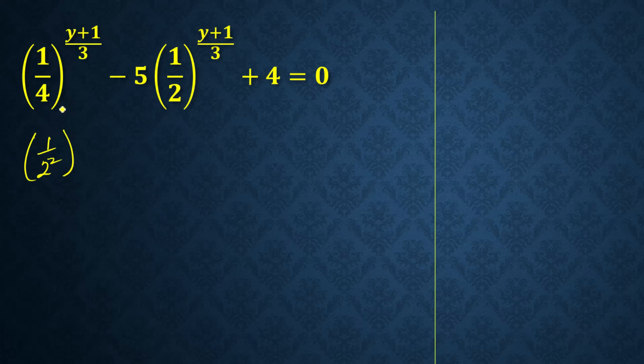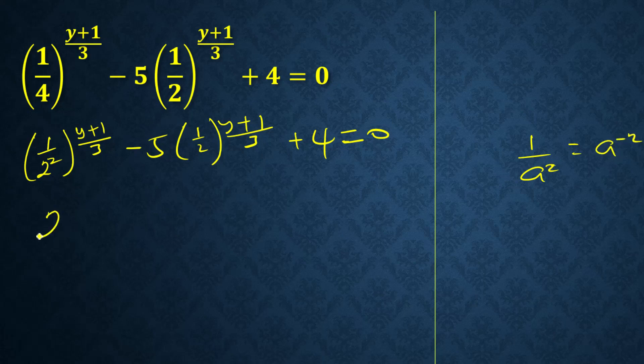So (y+1)/3 minus 5... Let me keep this (y+1)/3. This one is power. This side will be 1/2 to the 2, which is the same as 2 to the power minus 2. So we have the power here.